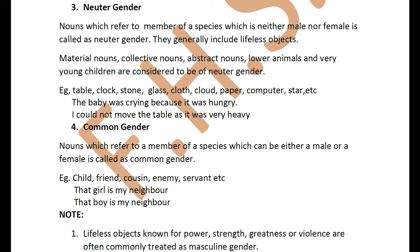Examples of neuter gender: table, clock, stone, glass, cloth, cloud, paper, computer, star, etc. Sentence: 'The baby was crying because it was hungry.' You are calling the baby as 'it' — not she or he. The baby has to be male or female, but because it comes in the very young children category, you say 'it'. Second sentence: 'I could not move the table as it was very heavy' — the table is neither male nor female, that's why you refer to it as 'it'.